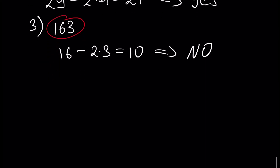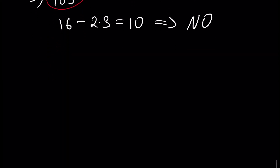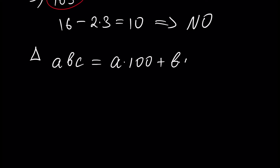The proof of this result is quite technical, but I would like to give it. Assume we have a three-digit number with digits A, B, C. Its decimal representation is A times 100 plus B times 10 plus C times 1.